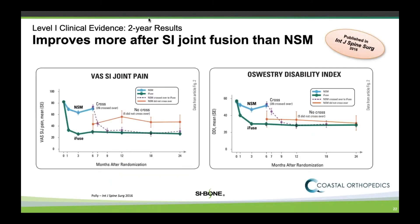This slide shows greater improvement after SI joint fusion than the non-surgical options discussed earlier — physical therapy and bracing, chiropractic care, and medication. So this is really an effective way of treating SI joint pain when compared to other options. That doesn't mean we shouldn't try those things first, but it's nice to have this option at the end because it is very effective.